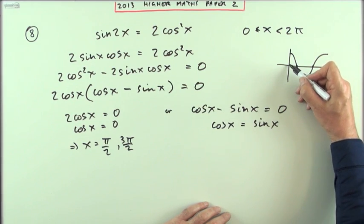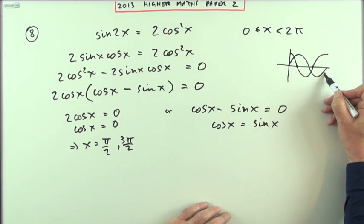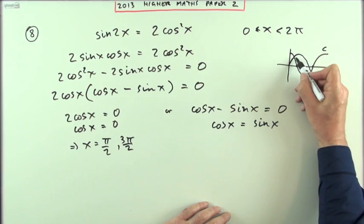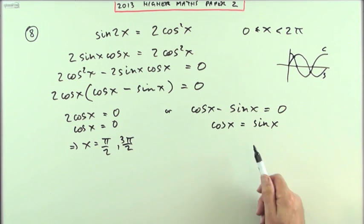the sin x graph is the same as the cos x graph in two places. So it's going to be two solutions. And you probably know that one anyway. You know they're both the same at 45. But strictly speaking, instead of just doing that, you could rearrange this one more time.